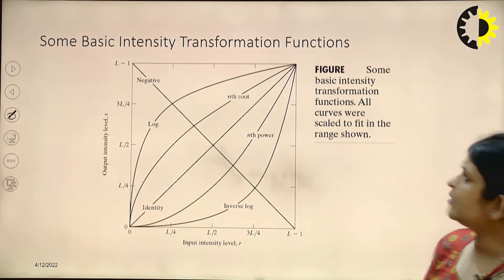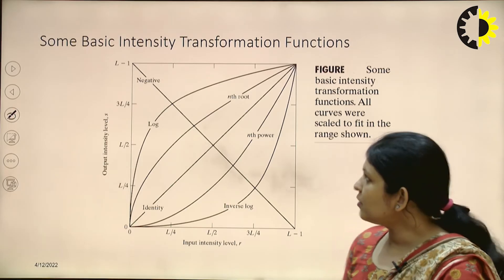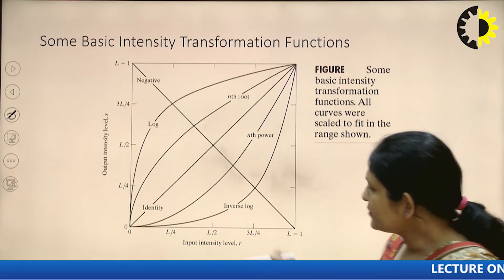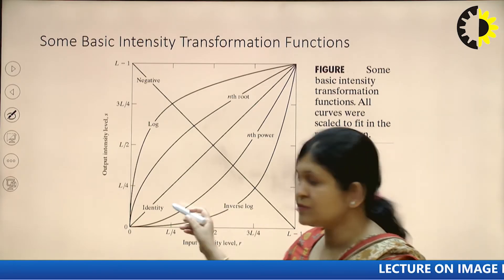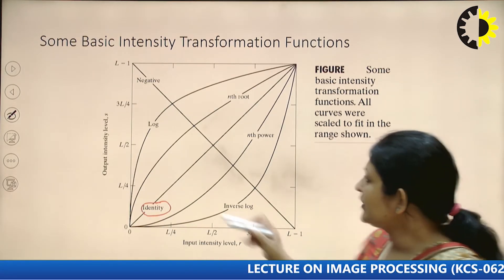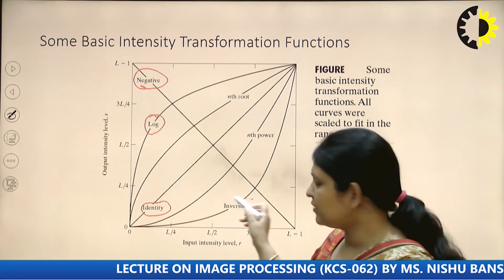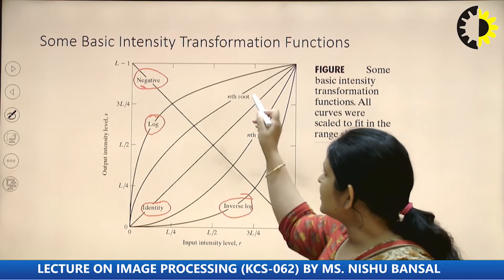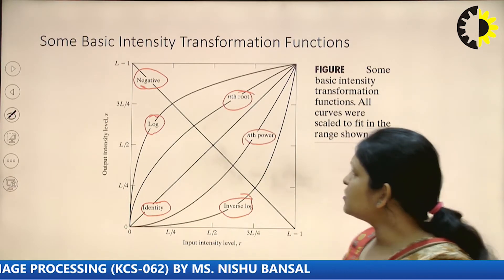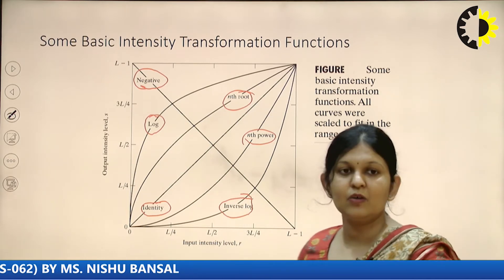Let's see some basic intensity transformation functions. This is a very important graph covering all the intensity transformation functions. The functions are: identity, negative, log, inverse log, nth root, and nth power. We will see one by one how they work and how we get the output intensity values.